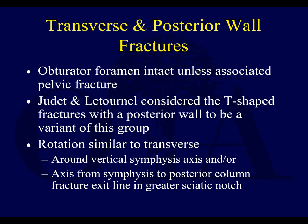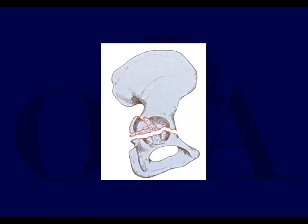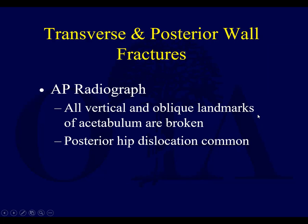Rotation is similar to transverse fracture patterns. Here's an example of the transverse posterior wall — an inverted Y pattern with the cotyloid fossa. You get your transverse fracture pattern but also the posterior wall component. So: transverse posterior wall. AP radiographs show all your vertical and oblique acetabular landmarks are broken, and oftentimes you'll have a posterior hip dislocation.